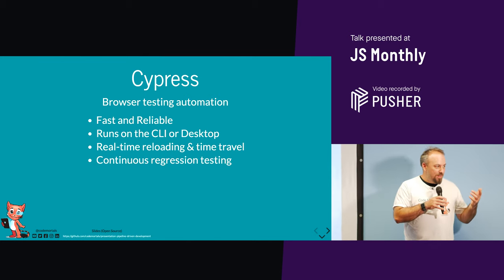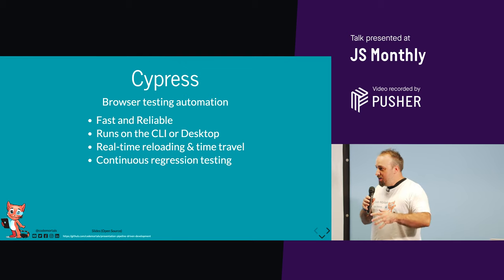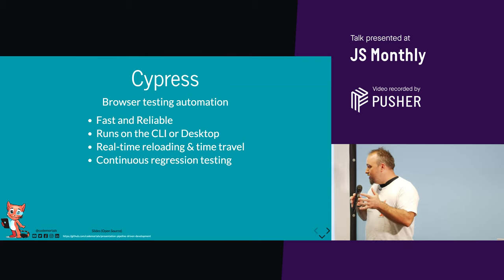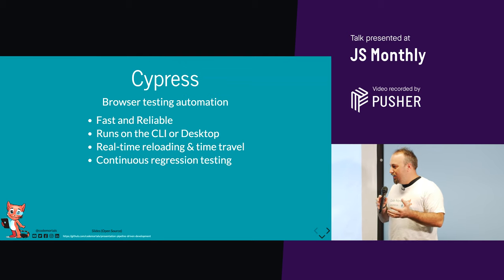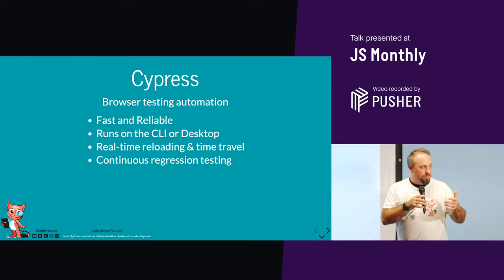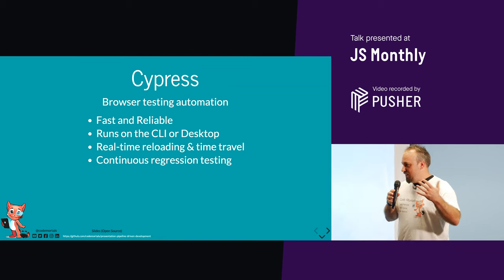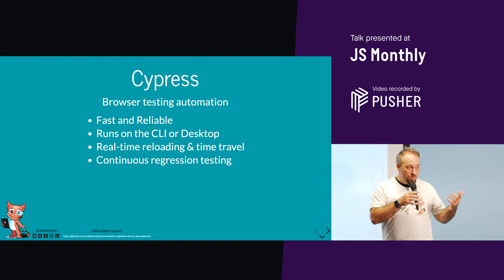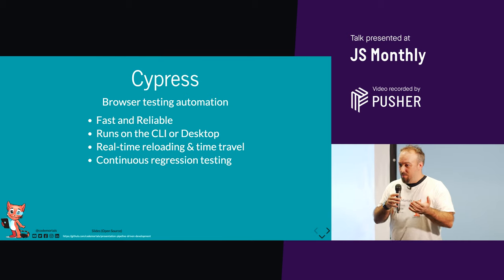We've been using Cypress for about a year now. We used Selenium Protractor and a few other things in the past — they were great, but we had lots of stability issues. When we moved from Angular 1 through to the latest versions of Angular, Protractor is really unstable; it's not built for the latest version of Angular even though it comes out of the box with it. We tried Nightwatch and WebDriver.io, but we settled on Cypress because it was really stable and easy to use. Whilst there are some limitations — like you can only run it in Google Chrome — they're working on that.